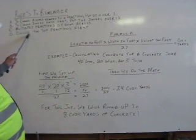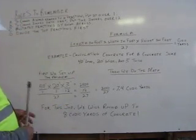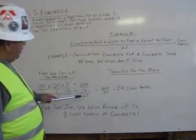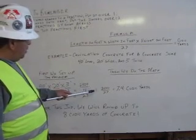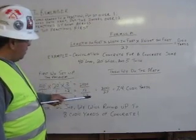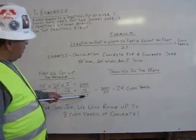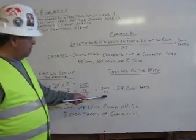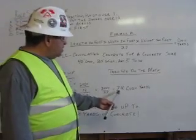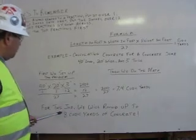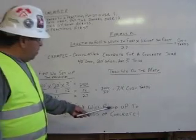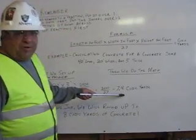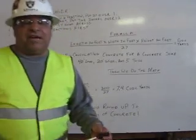Next, we divide the top fractions first. 12 into 2,400 goes 200 times. Then 27 into 200 — we put it over 27 — and it equals 7.4 cubic yards. For this job, we will round up to 8 cubic yards of concrete, because 7.4 rounds up to 8. And that's how it's done.